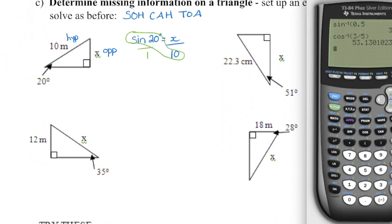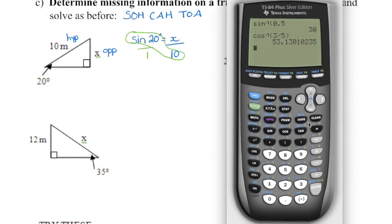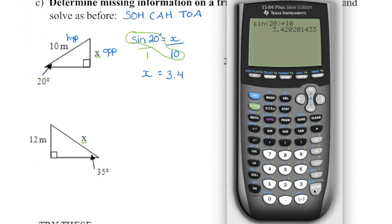Pulling up the calculator: enter sine of 20, close the bracket, then times 10, equals. We don't need to divide by one. If it doesn't specify, round side lengths to the nearest tenth and angles to the nearest whole measure. In this case, x equals 3.4 meters.